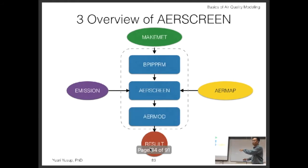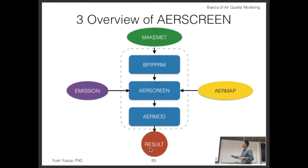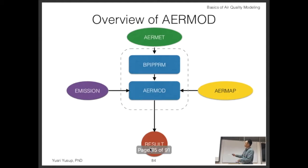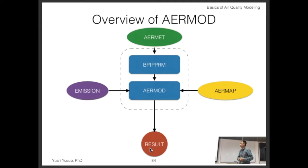The difference between the refined model and AERSCREEN is that the refined model doesn't use MAKEMET or AERSCREEN. MAKEMET simulates the meteorology of the area, giving a rough estimate since AERSCREEN doesn't require actual meteorology data. For the refined model, you need to provide actual meteorological values. Even though the refined model looks simpler in diagram, it's actually more complicated because of all the detailed data you need to acquire.